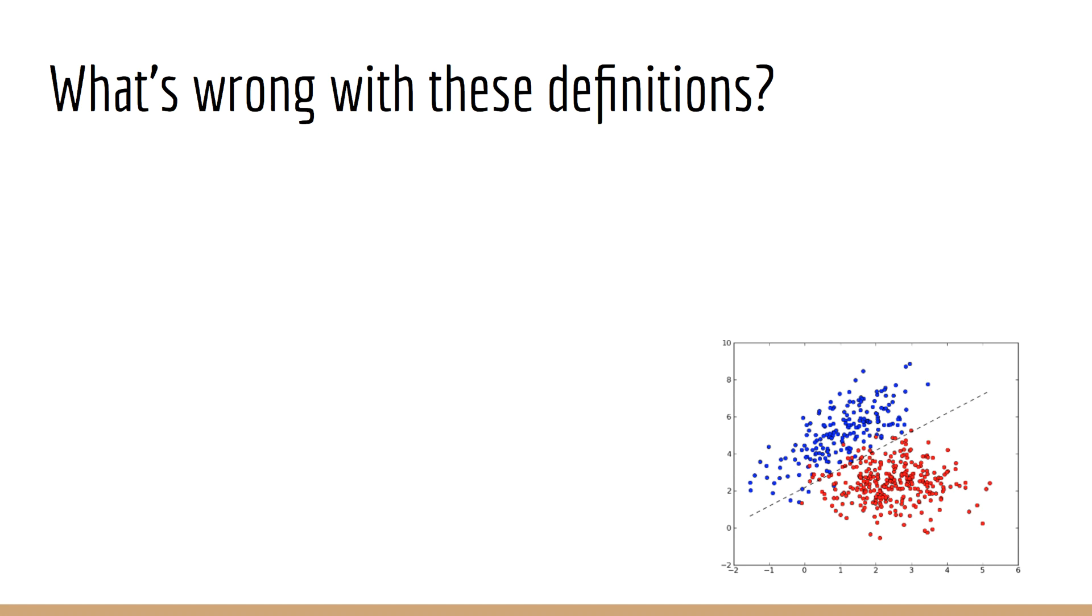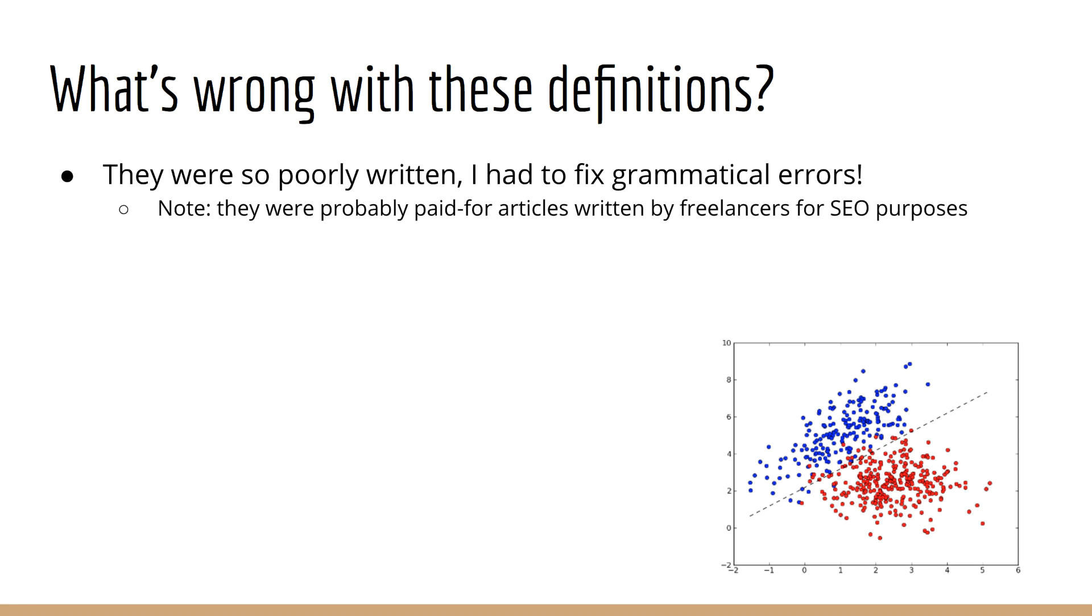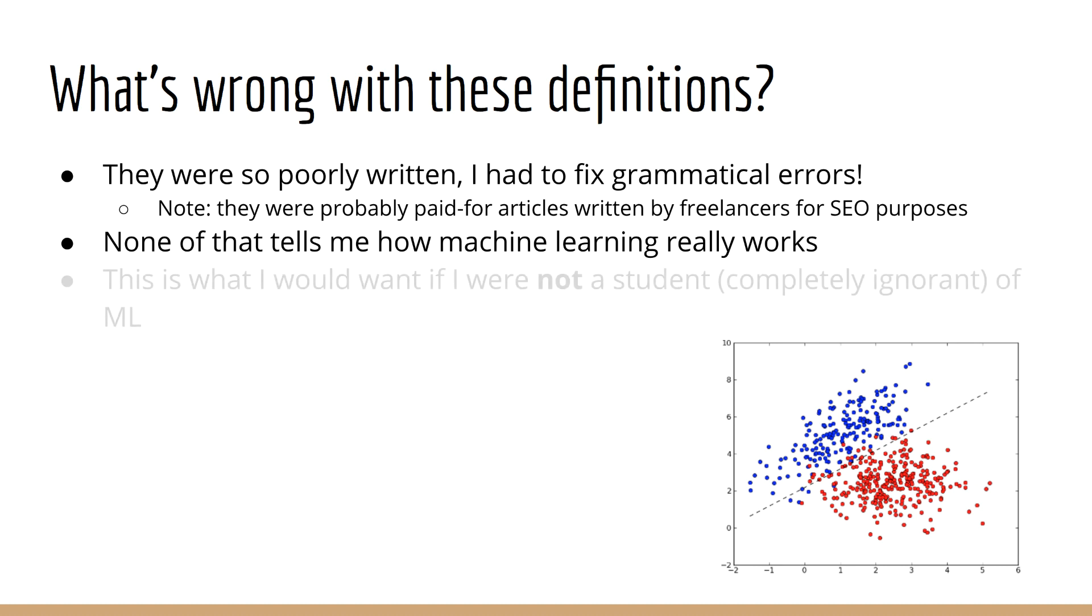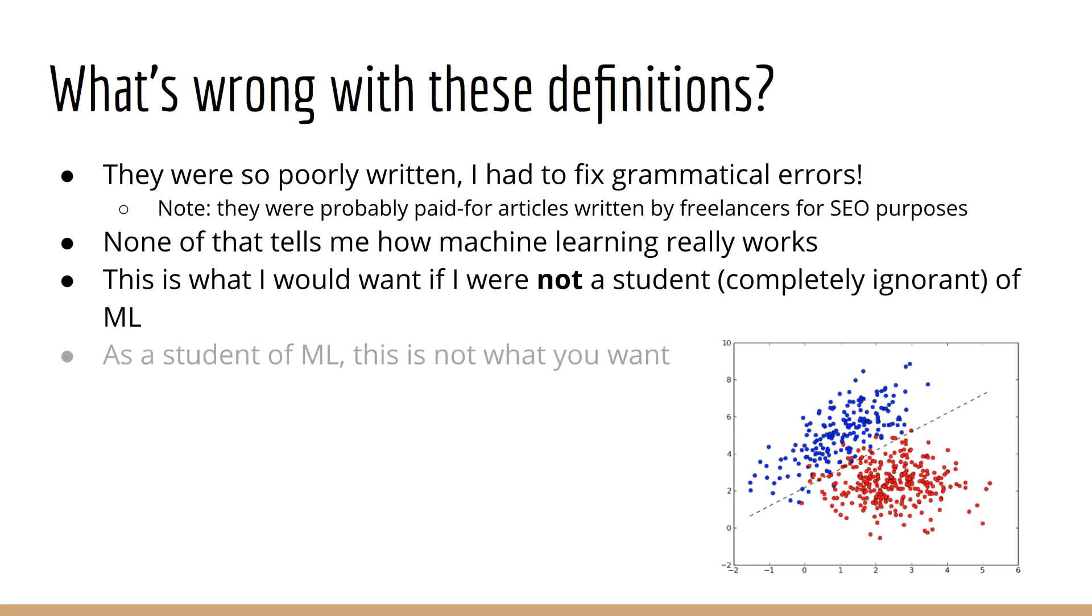In fact, these two definitions were so poorly written I had to fix them up a little bit due to some obvious grammatical errors. I didn't edit them too heavily since I didn't want to lose the gist of what they were saying, but you can tell that these were not written by people who actually know about machine learning. None of this tells me how machine learning actually works. This is what I would expect if I were not a student of machine learning, just a layman, and I wanted to know about how someone completely ignorant of machine learning would view it at a high level. As students of machine learning, this is not really how you want to think of what we are doing. So, starting now, you are no longer just a layman, you are a machine learning student.